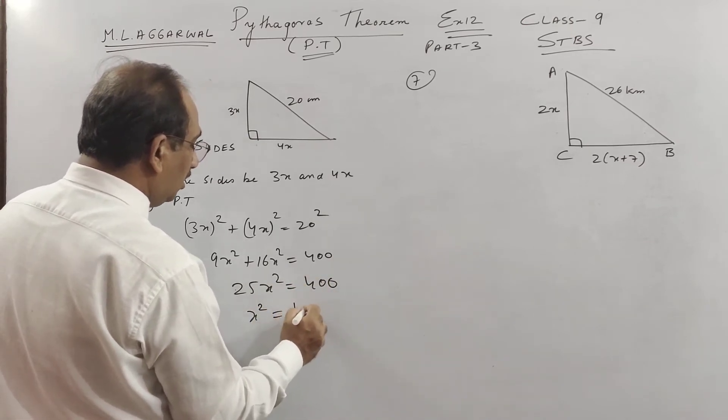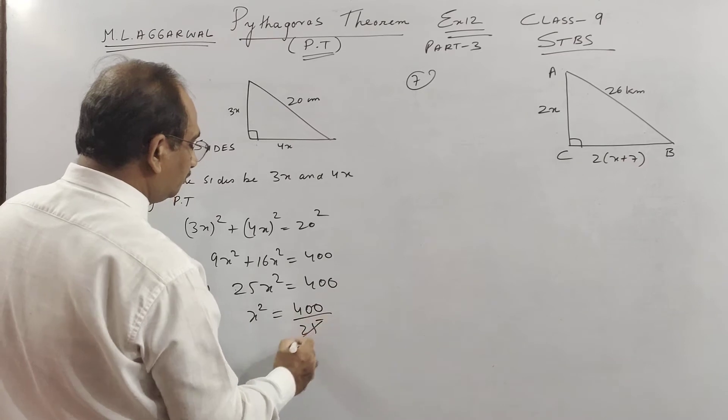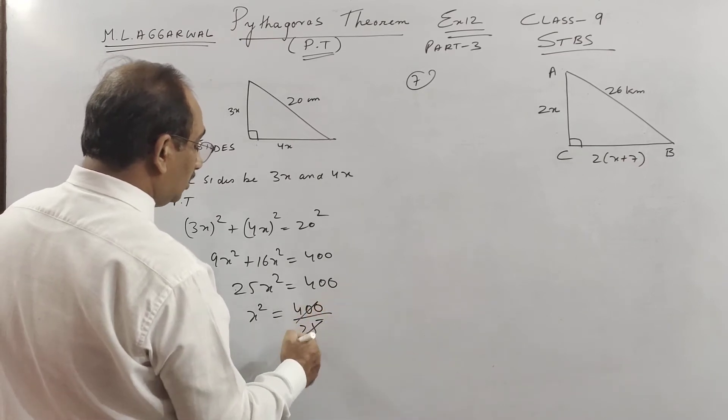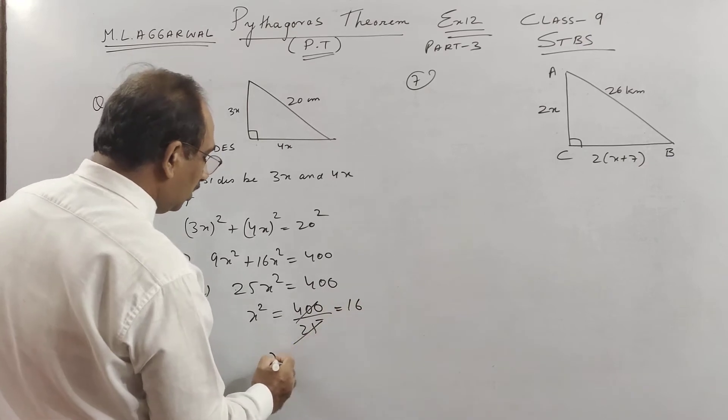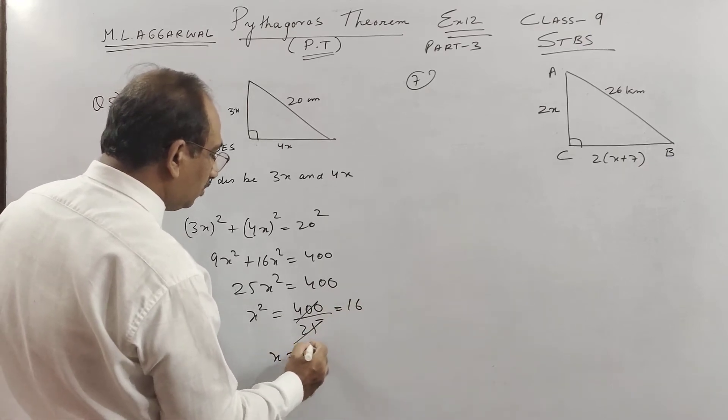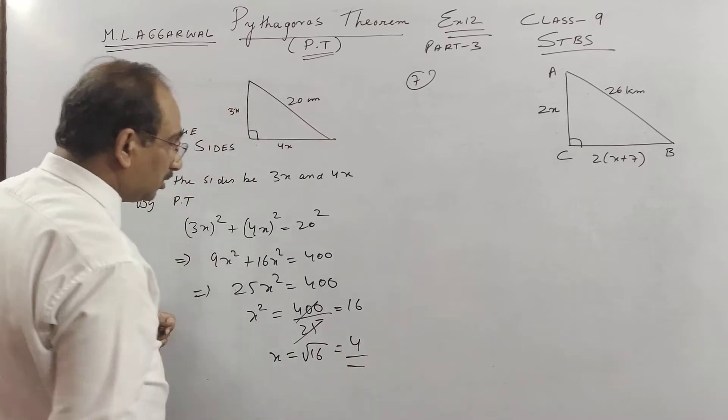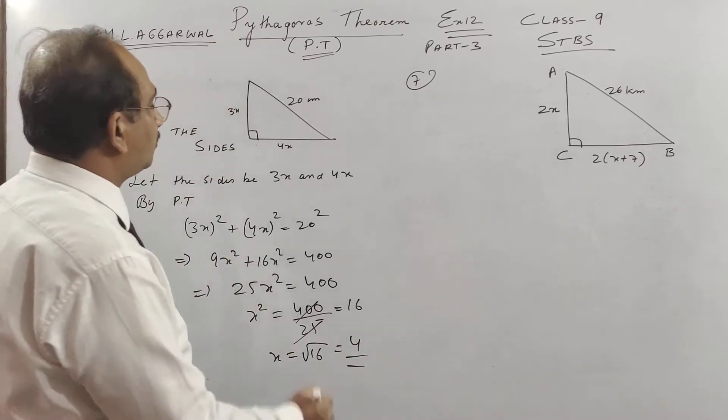Therefore, I told you you must see my class 8. This will go, 400 will go 16 times. So x will be plus root over 16. So we do not take minus because sides cannot be minus. X is 4.